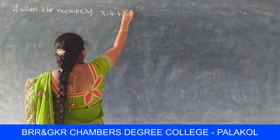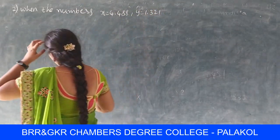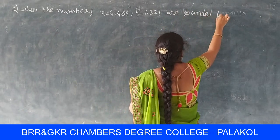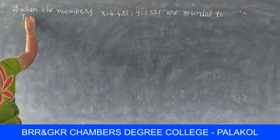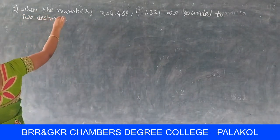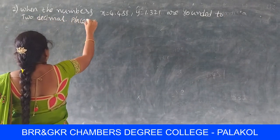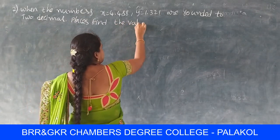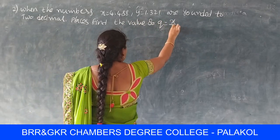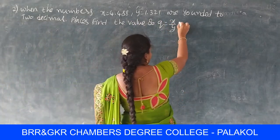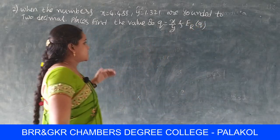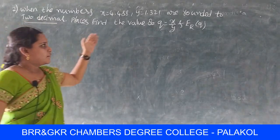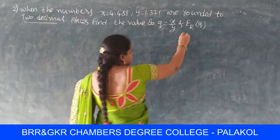The next example: given x = 4.488 and y = 1.321, both rounded to 2 decimal places, find the value of q = x/y and the relative error ER of q. The numbers x and y are rounded to 2 decimal places.